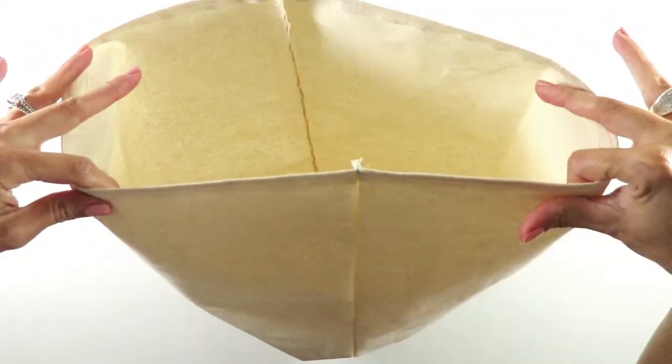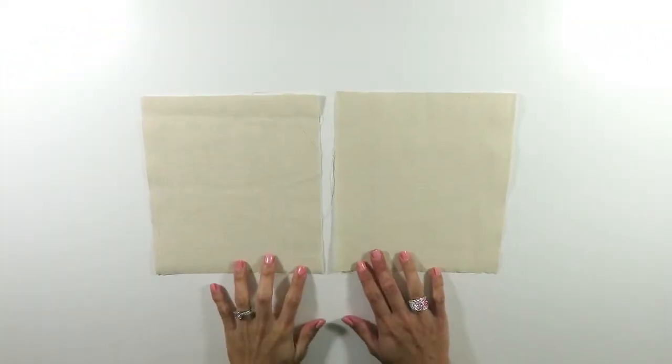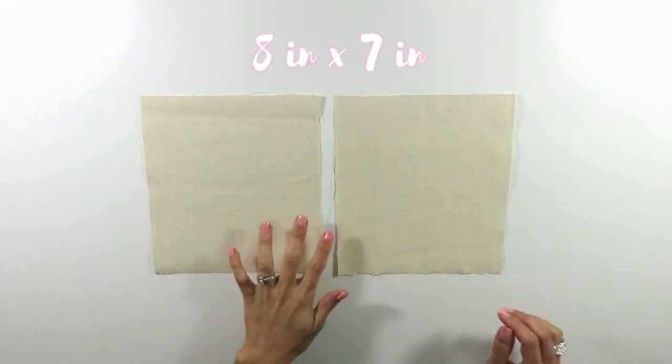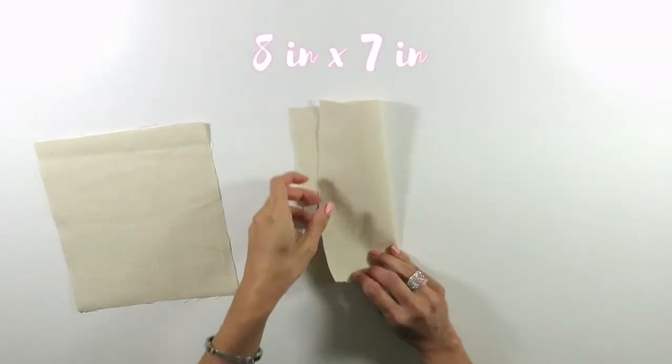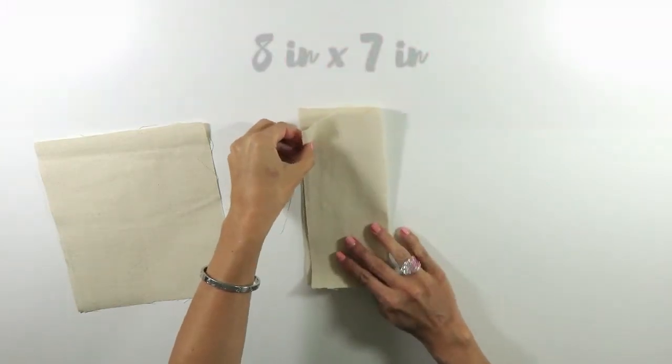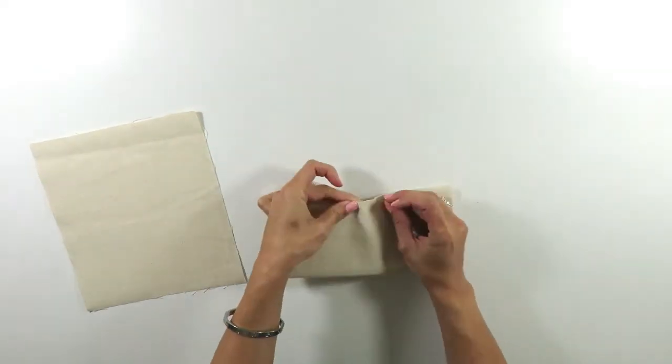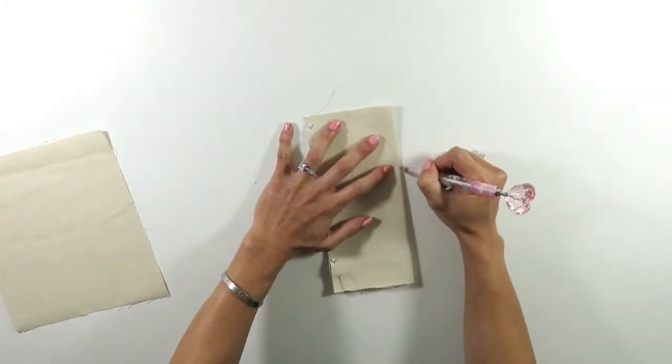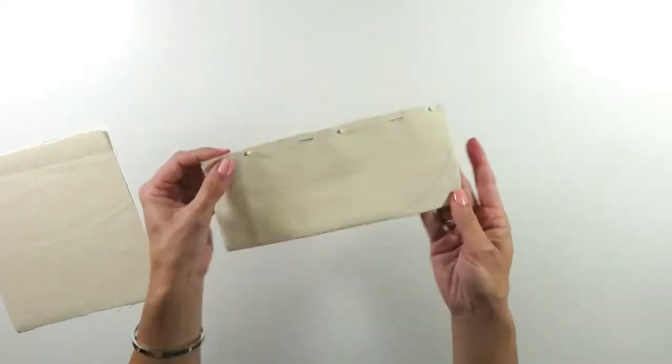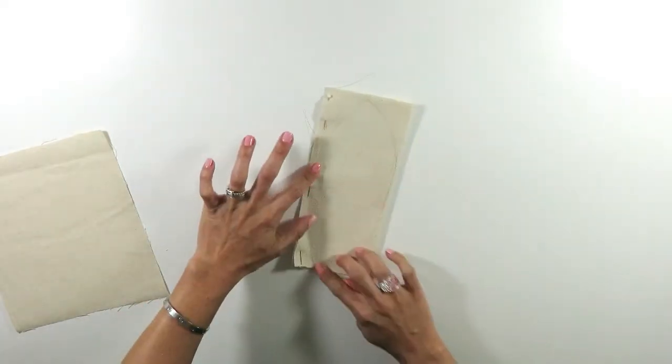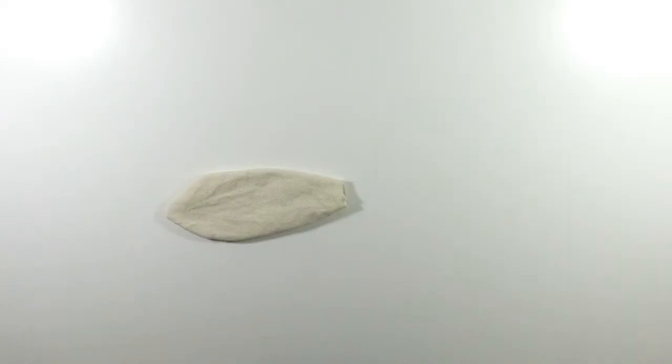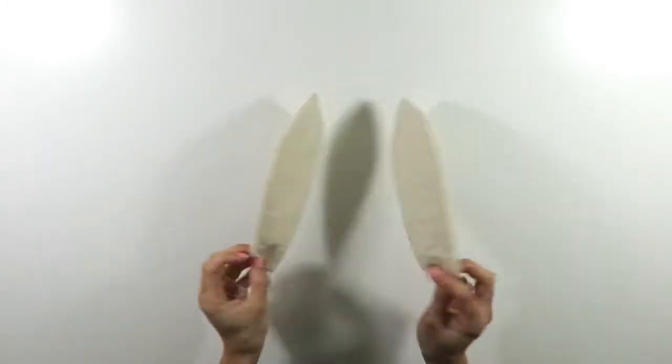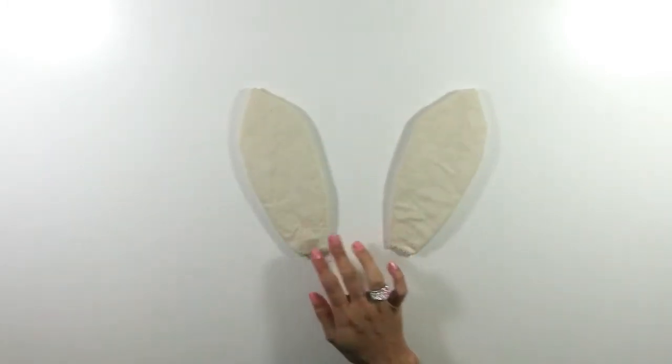So to make the ears I cut two pieces of fabric that are eight by seven, eight inches by seven inches, and I fold them both in half. Then with a pencil I drew the outline of the ear and I sewed right on top of the pencil. Then the only thing left to do was cut off the excess fabric and turn the ear right side out, and I did the same thing once more for the other ear.